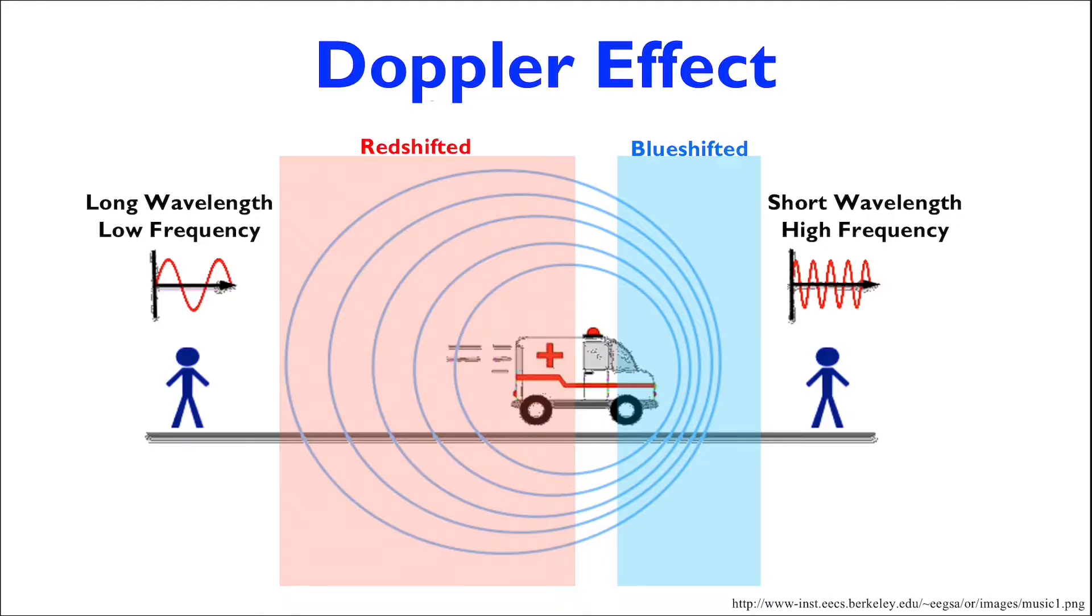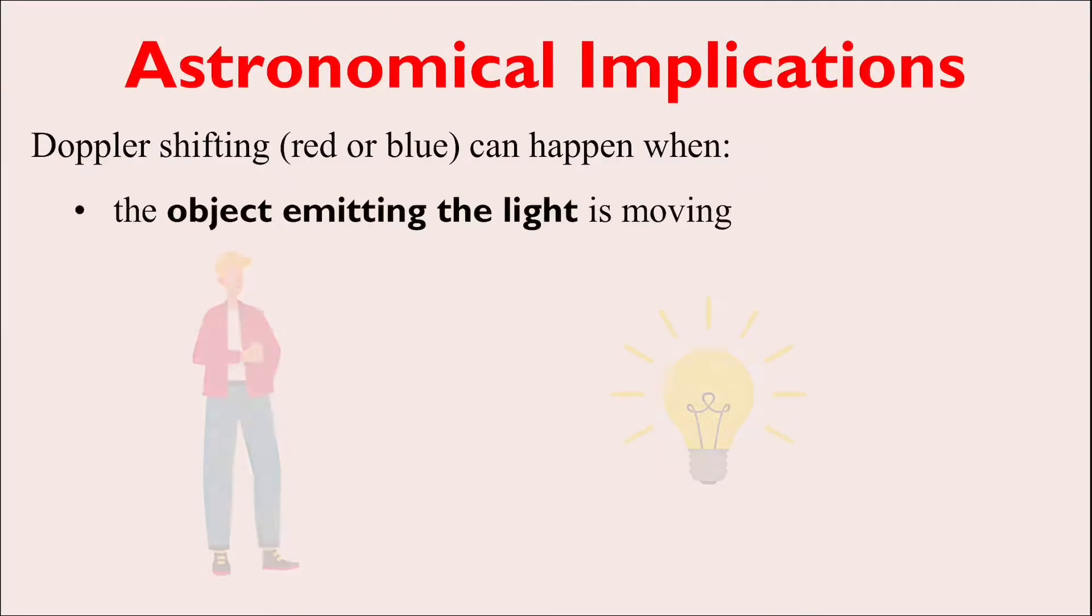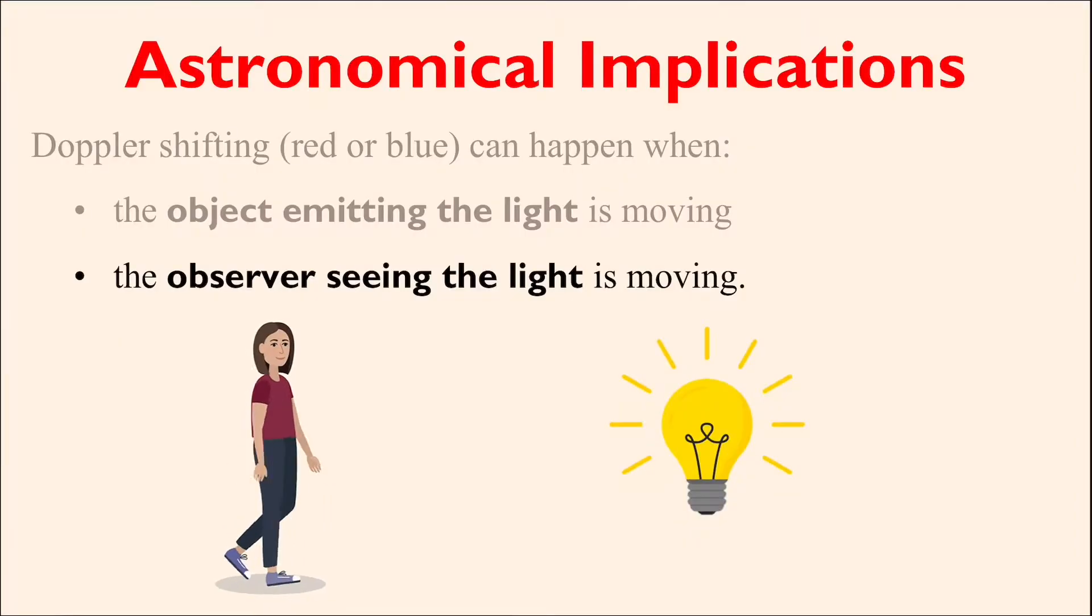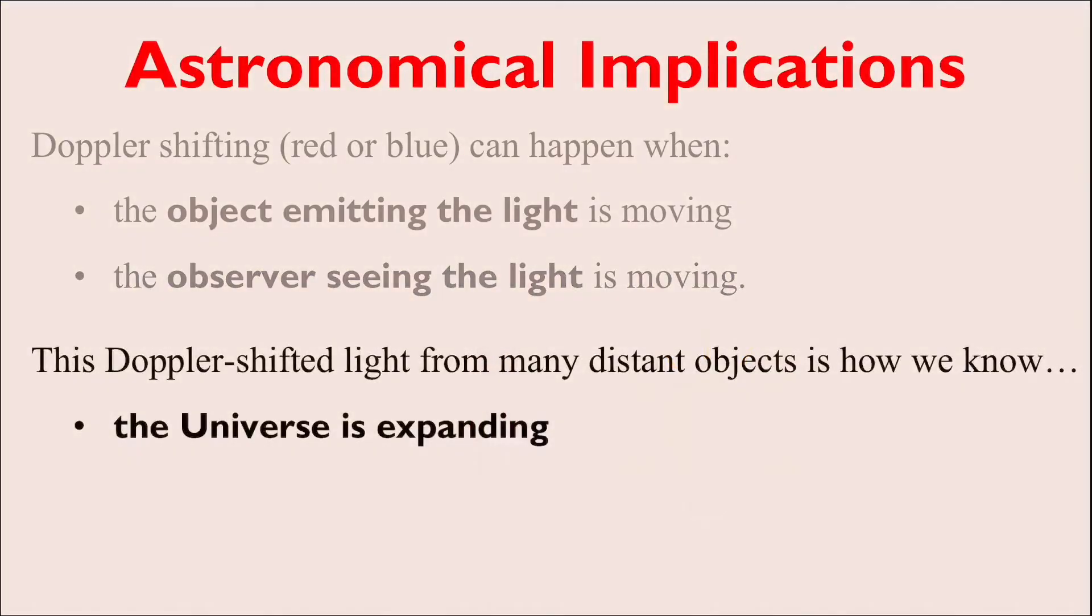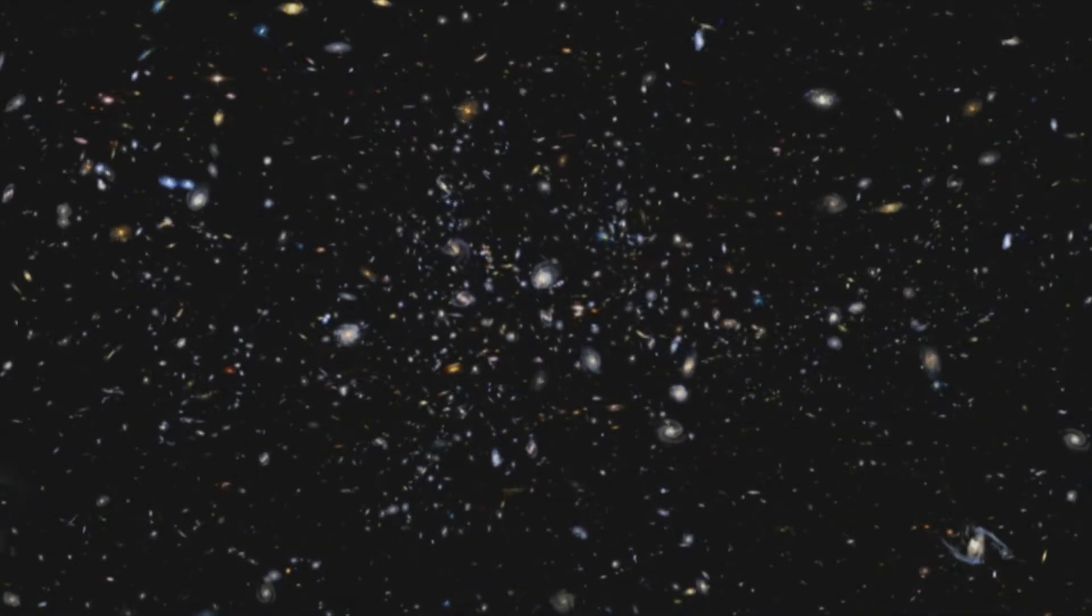But how does the Doppler effect present itself in astronomical situations? Well, it can happen when the object emitting light is moving, or when the observer seeing the light is moving. In fact, we can see Doppler-shifted light from many distant objects, which tells us that the universe is expanding.